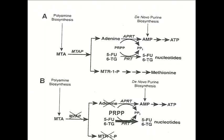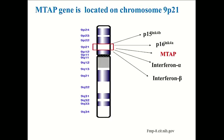This slide shows the lesion which occurs with MTAP deficiency. There's an increase in the coenzyme PRPP, and this allows nucleotide bases like fluorouracil and 6-thioguanine to be converted even more efficiently to nucleotides and become more potent anti-cancer drugs.